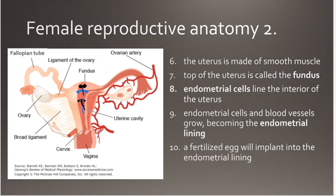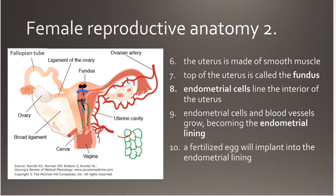The endometrial cells are going to line the interior of the uterus. The endometrial cells are going to be a thin lining after a menstrual period at the beginning of the growth of the endometrium cycle. As estrogen is being produced within the female cycle, those cells are going to replicate and the endometrial lining is going to get larger and larger. These cells are going to need blood supply, and capillaries are going to grow in, so when we talk about the endometrial lining, we're talking about both the cells and the blood vessels.